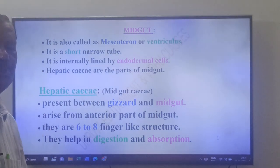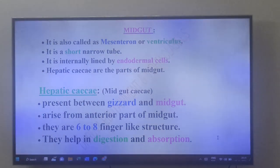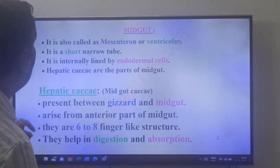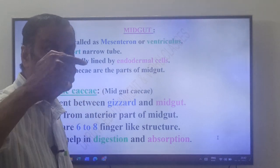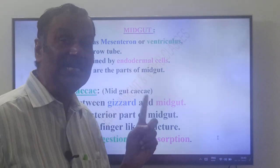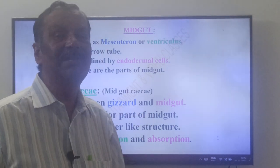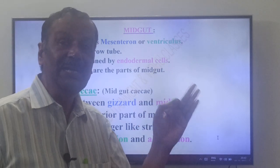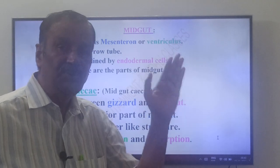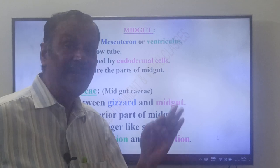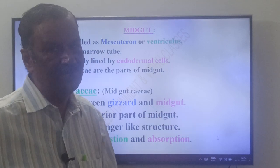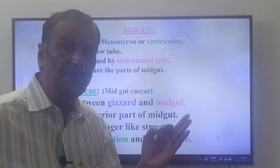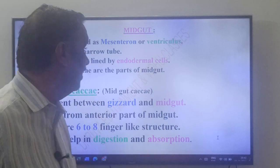The midgut is a short to narrow tube. It is internally lined by endodermal cells. Foregut and hindgut are lined by ectodermal cells, while the midgut is lined by endodermal cells.